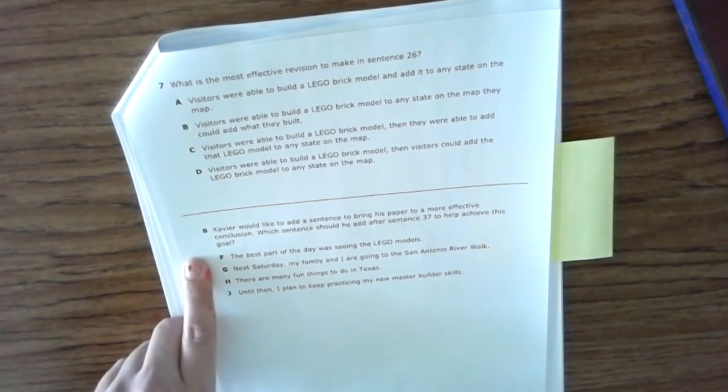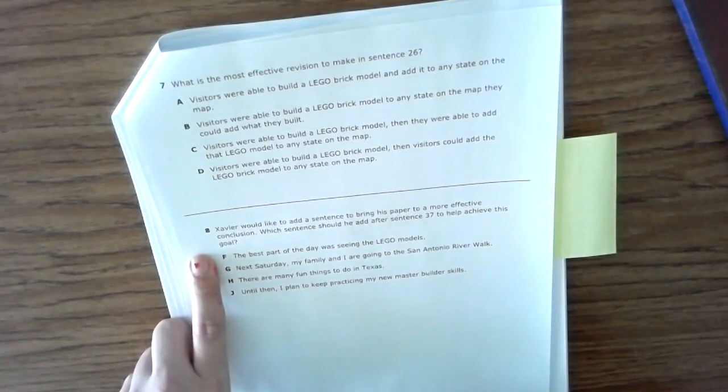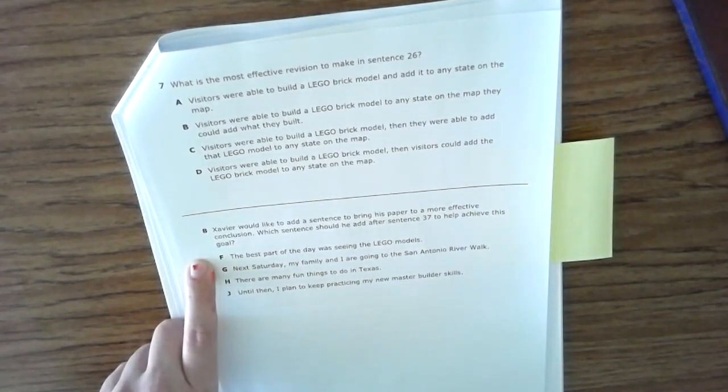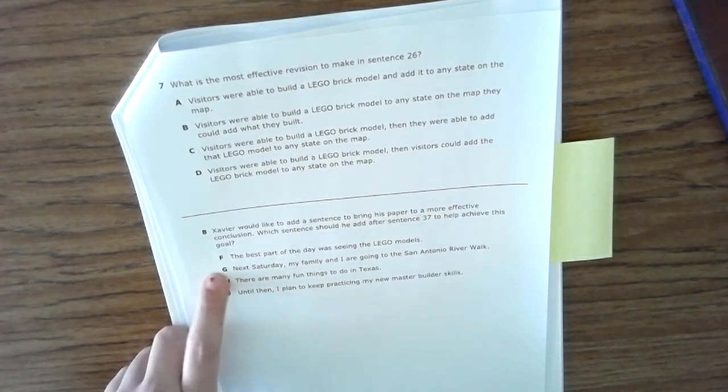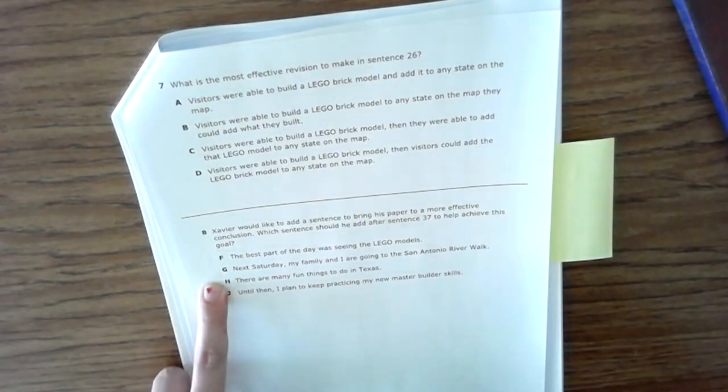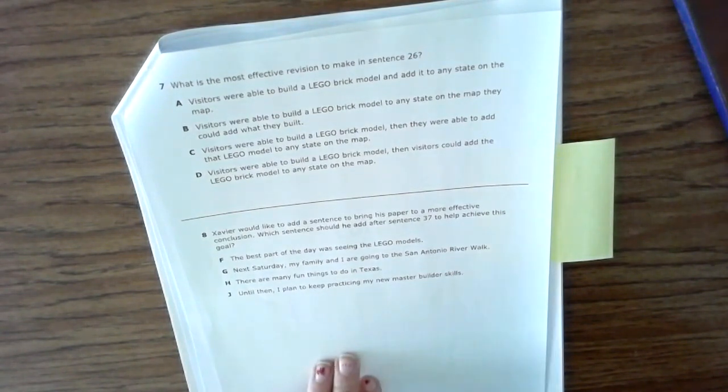Number eight: Xavier would like to add a sentence to bring his paper to a more effective conclusion. Which sentence should he add after sentence 37 to help him achieve this goal? F: The best part of the day was seeing the Lego models. G: Next Saturday my family and I are going to the San Antonio Riverwalk. H: There are many fun things to do in Texas. J: Until then I plan to keep practicing my new master building skills.